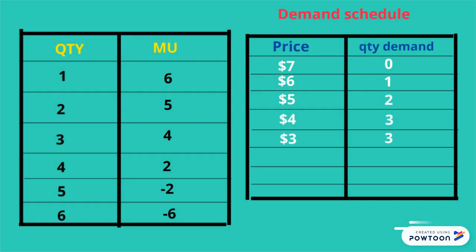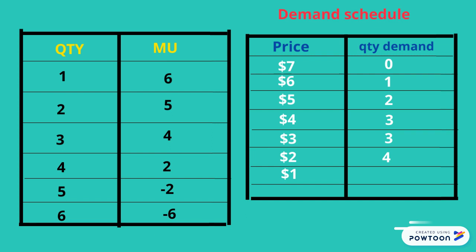When the price drops to $2, we are looking at MU of 2. Therefore, quantity demanded will be 4. When the price drops to $1, we are looking for MU of 1, which is not available. Therefore, we look for output that gives us more than 1 unit of satisfaction. In this case, consumers will choose MU of 2. Therefore, quantity demanded will be 4.